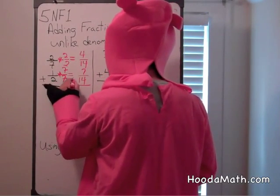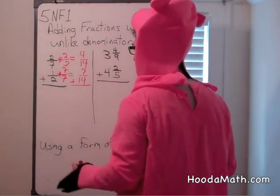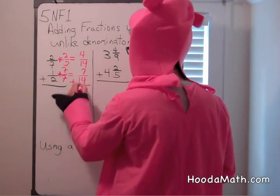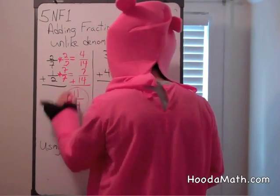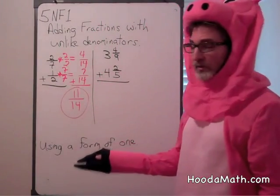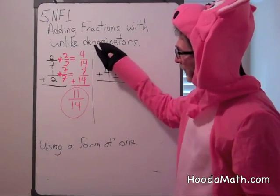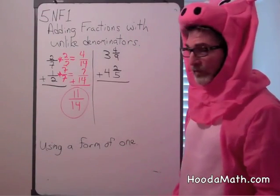7 times 2 is 14. When we add 4 fourteenths and 7 fourteenths, we get 11 fourteenths. Notice, when we add fractions, you only add the numerators, or top number.